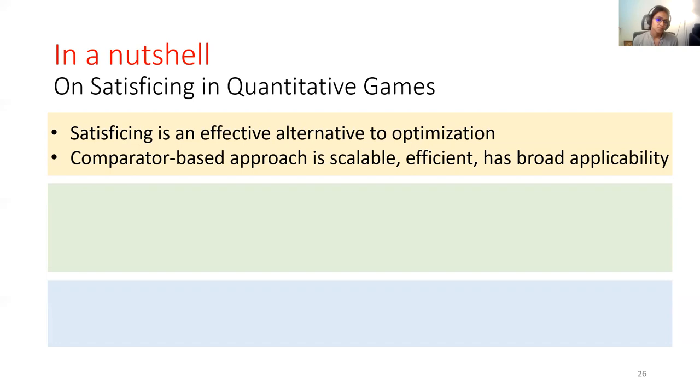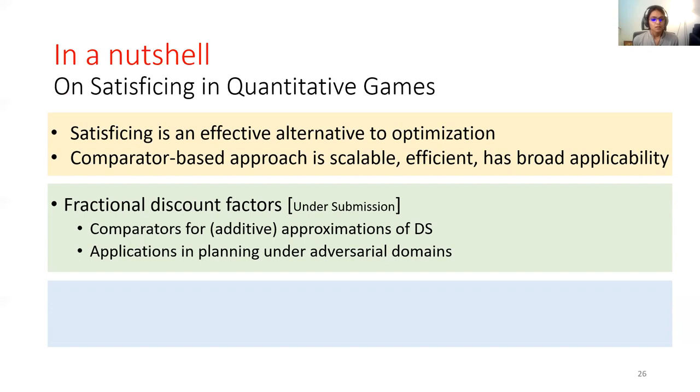The one drawback of the current algorithm is that it works only on integer discount factors and not on fraction discount factors. That work is currently in progress, where we show that although it's not possible to construct omega-regular comparators for fraction discount factors, we can construct comparators for approximations and use that in various applications for planning under adversarial conditions.